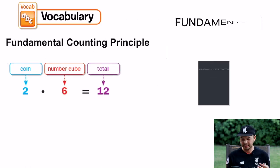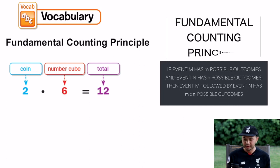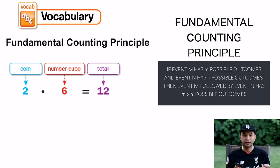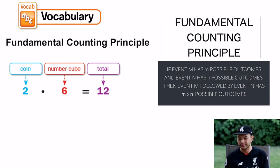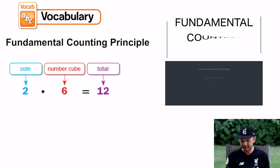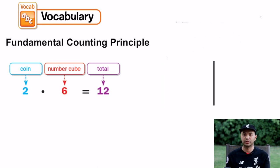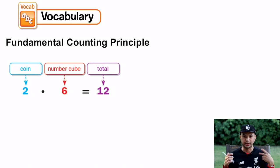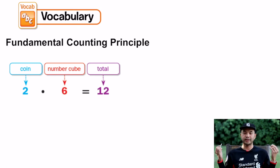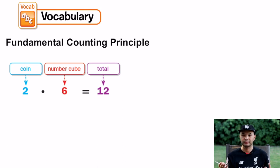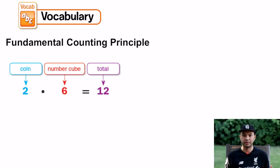Finally, the fundamental counting principle: if there are a certain number of ways to do one thing and another number of ways to do another thing, you multiply those two to get how many ways there are to do both things. Basically you're multiplying the events together to get the total number of outcomes. For example, a coin has heads or tails — that's two. A number cube has one through six — that's six. So if you flip a coin and roll a number cube, you multiply two by six and you get 12 different variations.